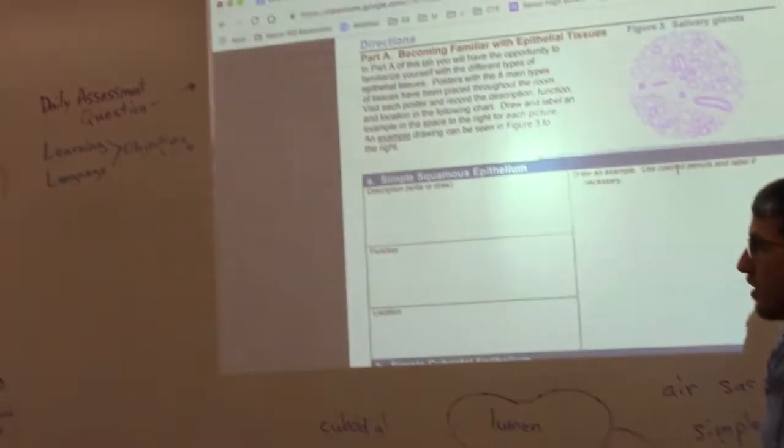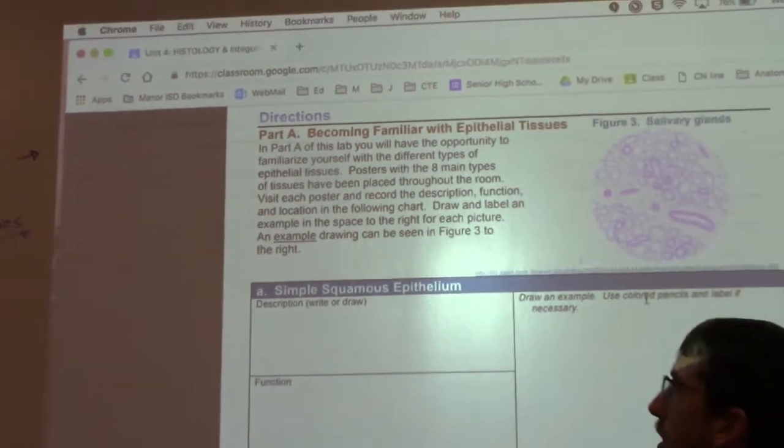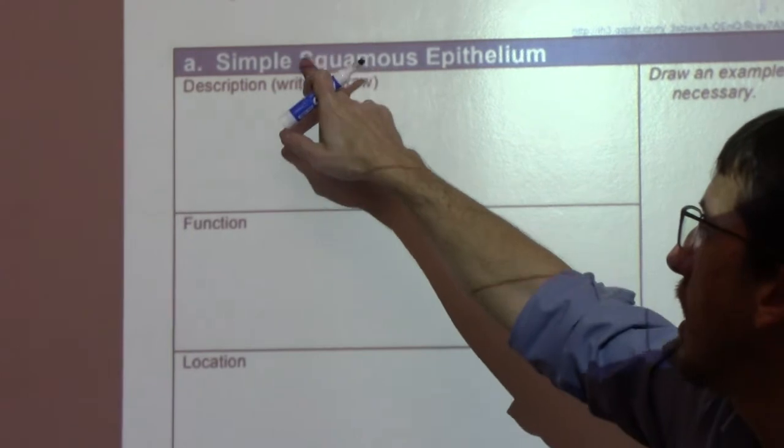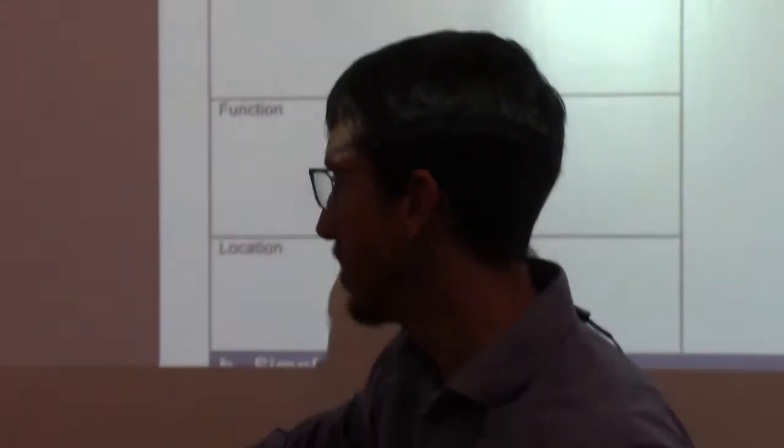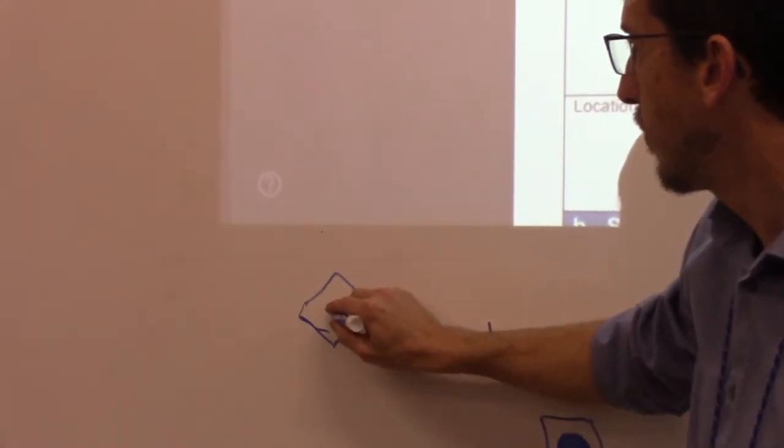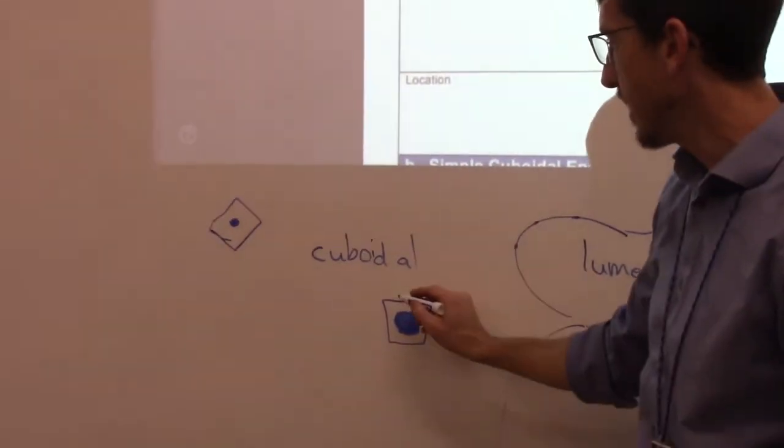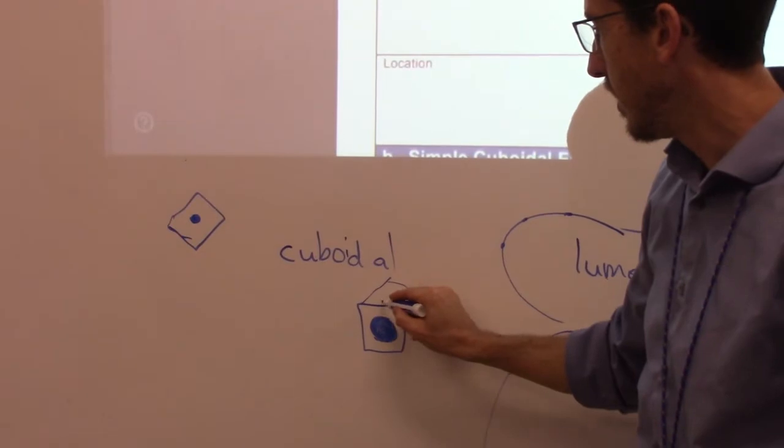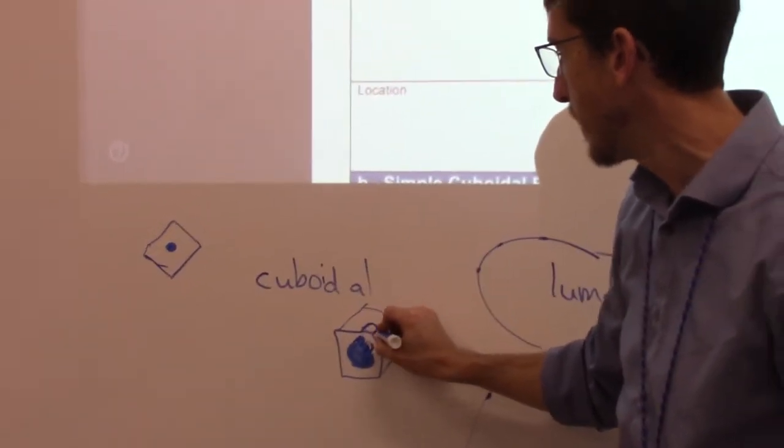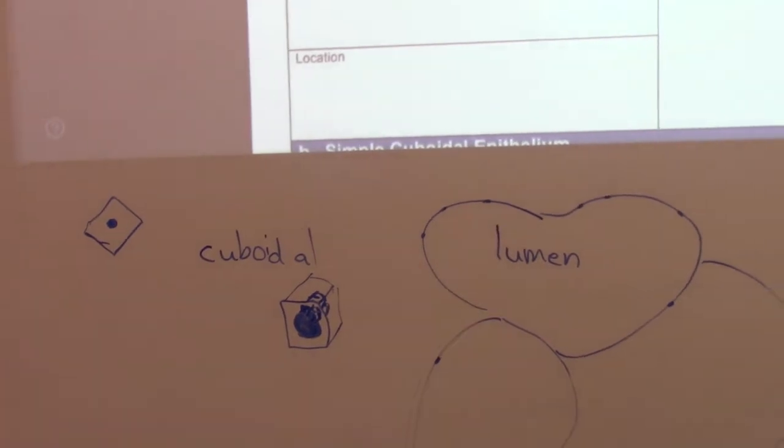So epithelial tissue mainly is to protect, but there's some specifics with each one. This is simple squamous epithelium, and squame, we can see our shape right in that. It's going to be squashed. So it's going to be like a one-dimensional kind of thing with a nucleus in the middle. Cuboidal is going to be like that, but it's going to be 3D. And that nucleus takes up a lot of space in there. It's very well-defined inside there. There's that nucleus.